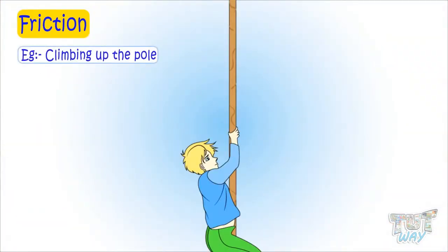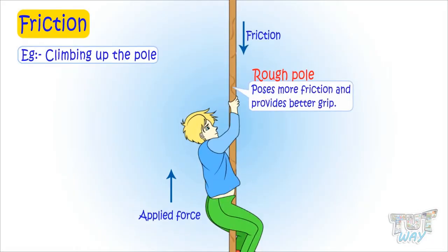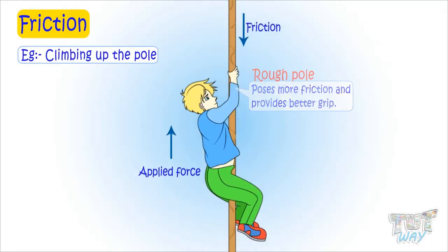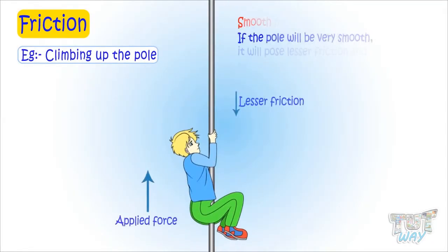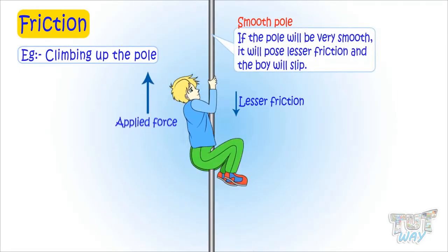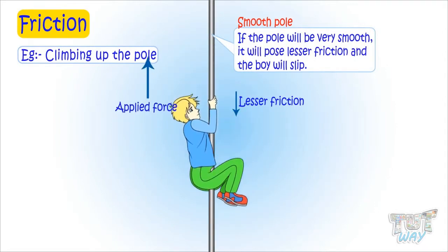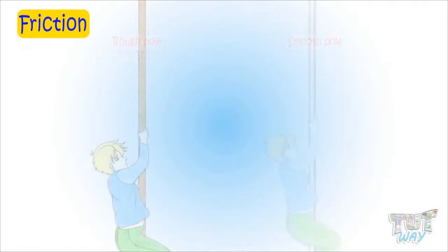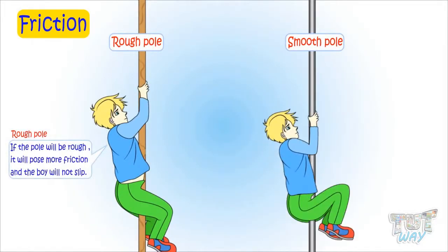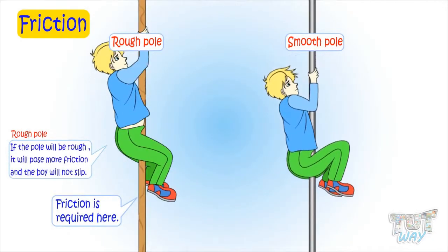Here the boy wants to climb the pole. So should the pole be very smooth or rough? We know the smoother the surface, the lesser the friction. If the pole is very smooth it will pose no friction and the boy will slip. But if the pole is rough, it will pose friction and the boy will not slip. So the pole should be rough so that the boy is able to climb easily. Friction is required here.